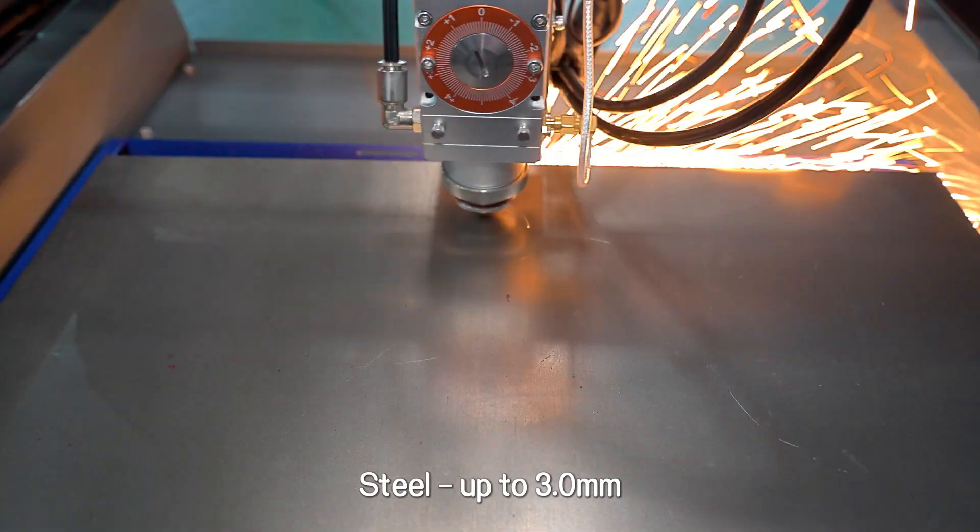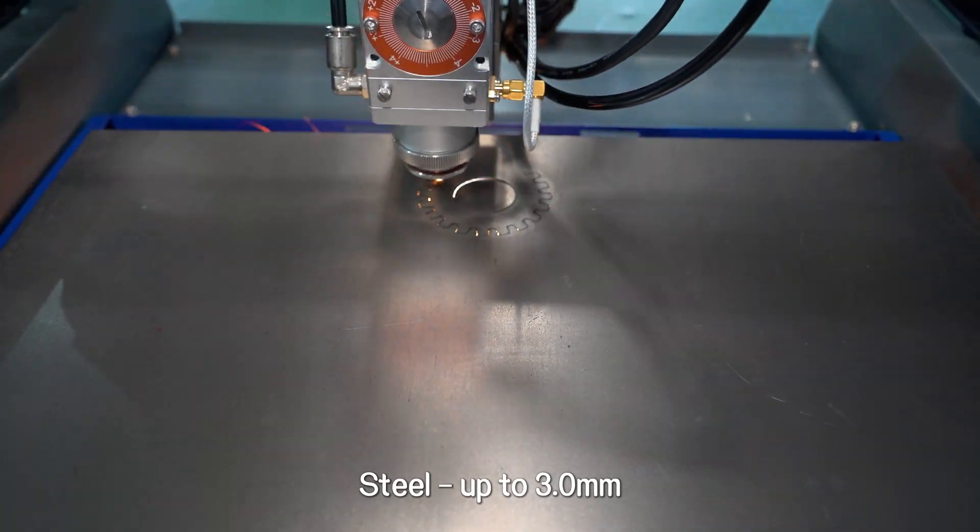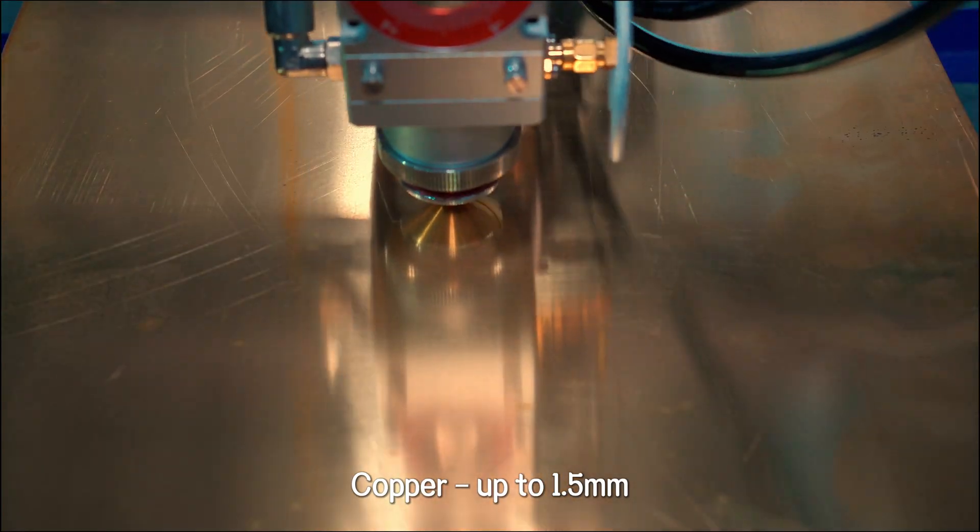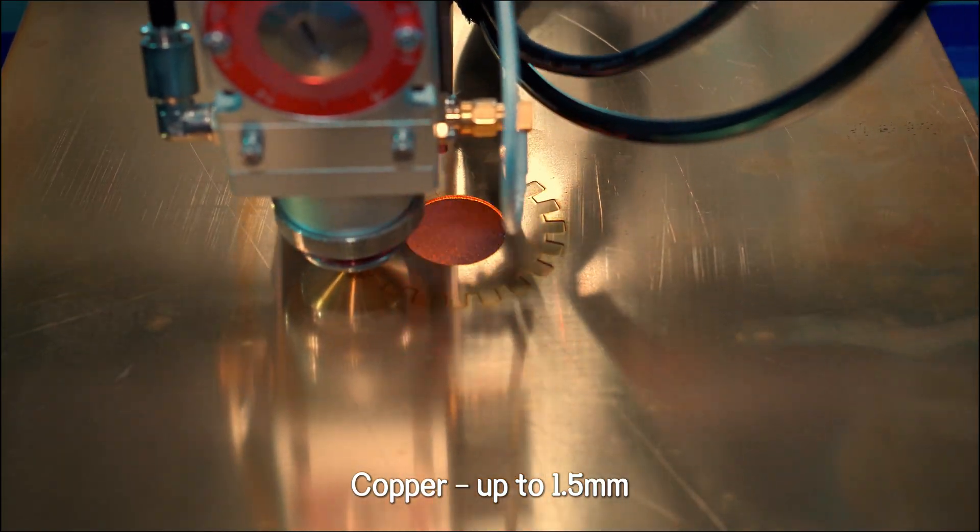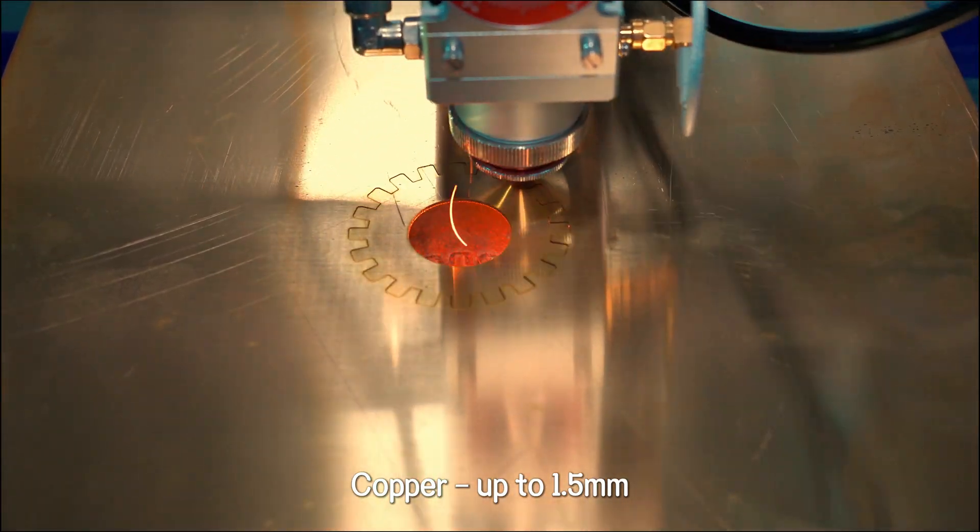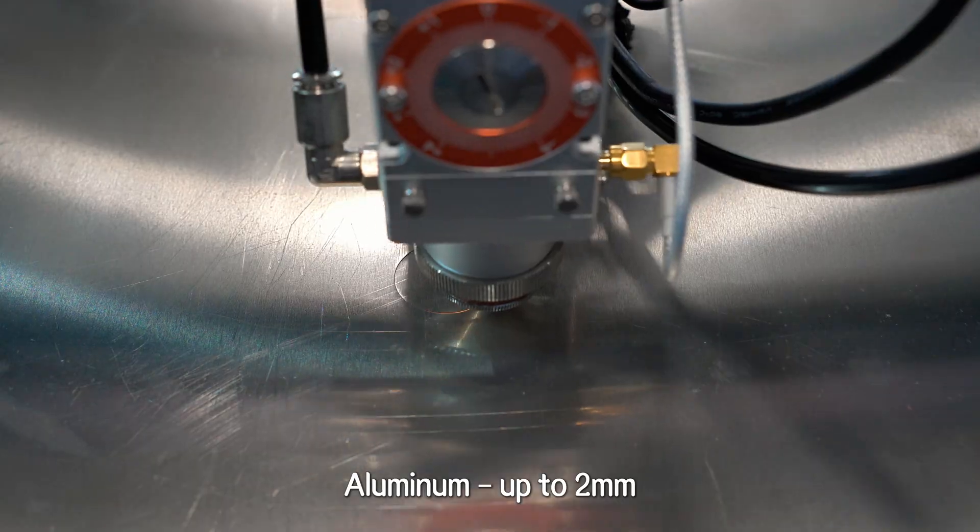E700 cuts steel up to 3.0 millimeters, copper up to 1.5 millimeter, and aluminum up to 2 millimeters.